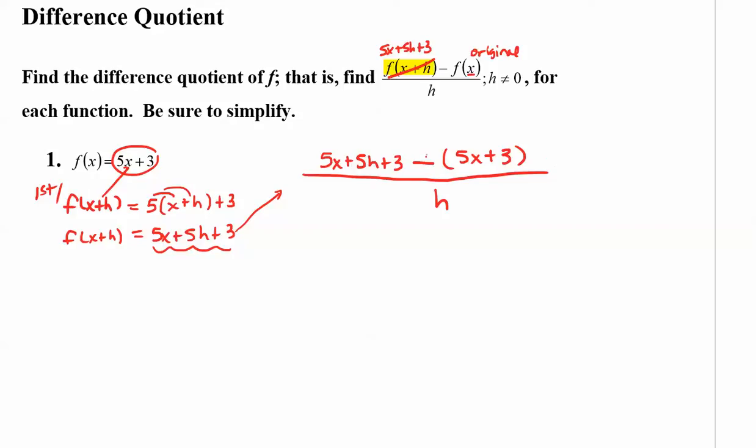Next, we need to distribute the minus into the group. So I have 5x plus 5h plus 3 minus 5x minus 3. Now if you do this correctly, when you distribute the minus, you should cancel off your terms. And it leaves you with 5h over h, and the h's divide into each other, leaving you with 5. And that is the solution.